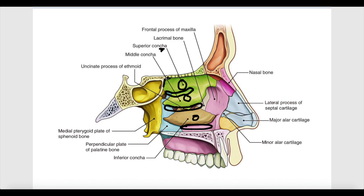Into the sphenoethmoidal recess opens the sphenoid sinus, which is the cavity in the body of the sphenoid bone. We also have the nasolacrimal duct, which transmits tears from the eyes into the nasal cavity. This nasolacrimal duct opens exactly below the inferior concha into the inferior meatus.